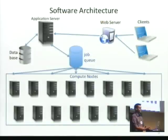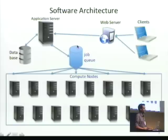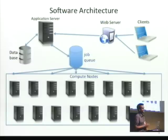This is a rough overview of the software architecture for our application. We have a web interface where clients can log into our website, the web server interacts with an application server, which queues jobs onto our high performance compute cluster. This single sequencing machine in our facility generates about 0.8 terabytes of data per week on average.